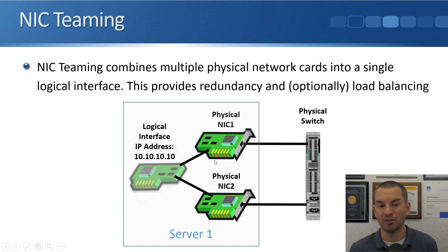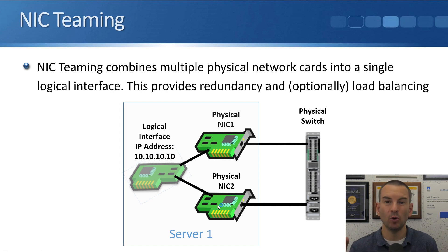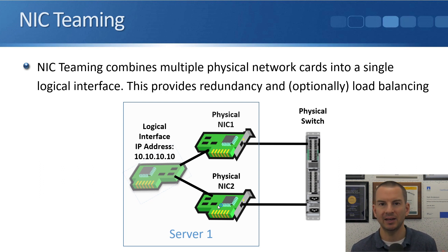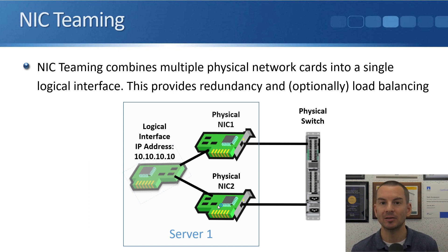Another thing you could do is use two different IP addresses on your two different NICs — for example, 10.10.10.10 on the top NIC and 10.10.10.11 on the bottom one. But then you've got the same host being reached through two different IP addresses, and this makes your networking much more complicated. It also makes it difficult to figure out how the redundancy and failover is going to work for your host connecting in. It's much easier if you can just use that one IP address on both network cards, so you need to do NIC teaming to be able to do that.